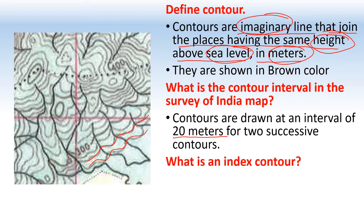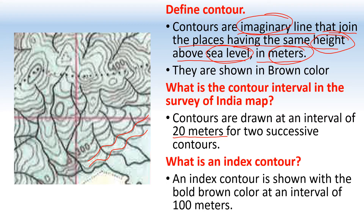What is an index contour? An index contour is shown in bold brown color at an interval of 100 meters. For example, from 300 to 400, you can count one, two, three, four, and then the fifth — there is a 100-meter difference between two index contour lines.